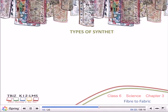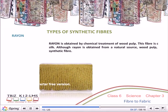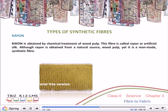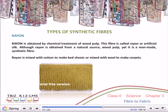Types of Synthetic Fibres — Rayon: Rayon is obtained by chemical treatment of wood pulp. This fibre is called rayon or artificial silk. Although rayon is obtained from a natural source, wood pulp, it is man-made and therefore a synthetic fibre. Rayon is mixed with cotton to make bedsheets or mixed with wool to make carpets.